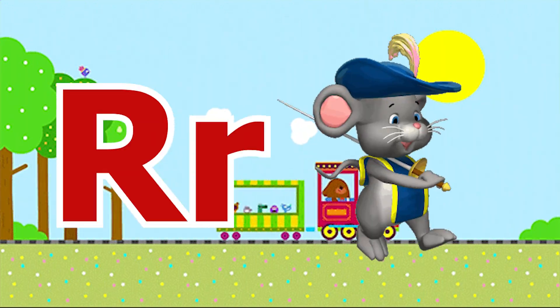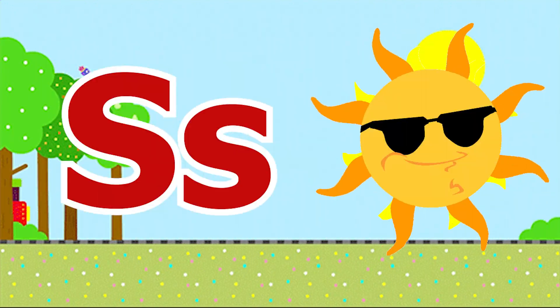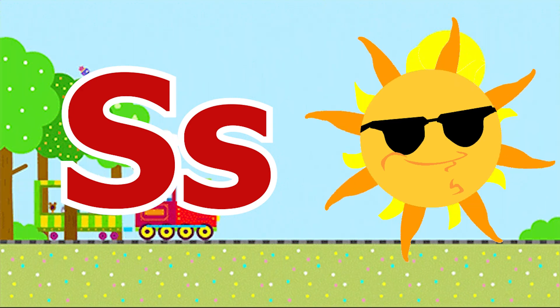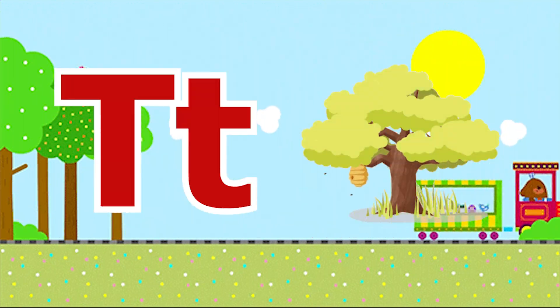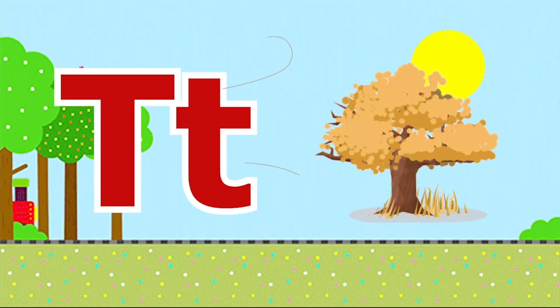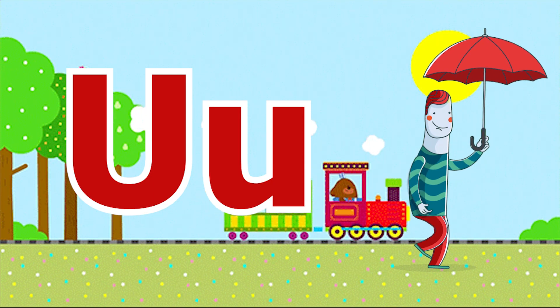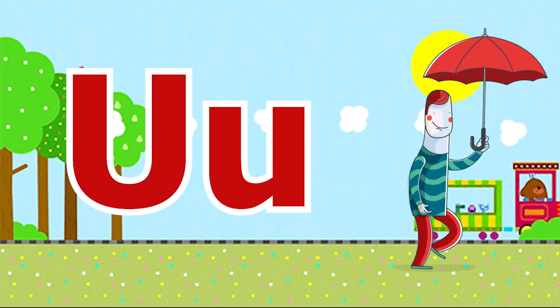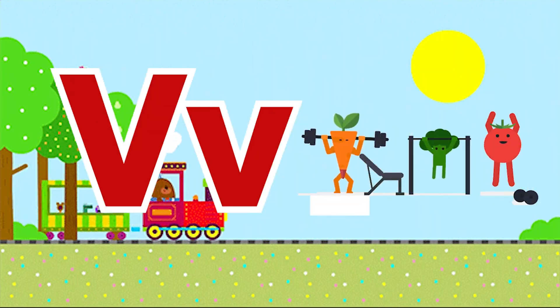R for rat, S for sun, T for tree, U for umbrella, V for vegetable.